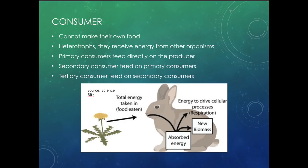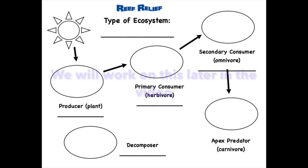Now we'll move on to our consumers. Consumers do not make their own food — they have to consume it. Producers produce food; consumers consume food. Consumers are considered heterotrophs, meaning they receive their energy from other organisms. When we talk about consumers, we have several different levels: the primary consumer, which is the first level; the secondary consumer, which is the second level; and then the tertiary consumer, which is the third level. We'll be practicing that with our food web worksheet towards the end of class.